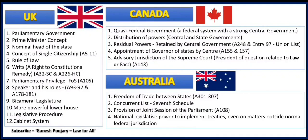From the Australian Constitution we got the concept of freedom of trade between states, the concurrent list in the 7th Schedule, the provision for a joint session of Parliament under Article 108, and national legislative powers to implement treaties even on matters outside normal federal jurisdiction.